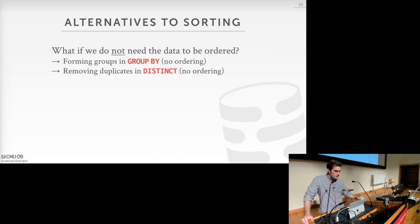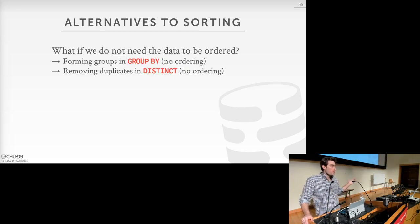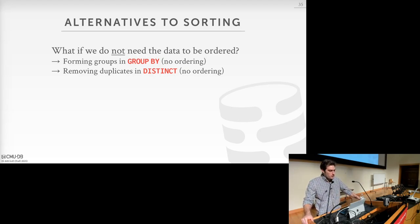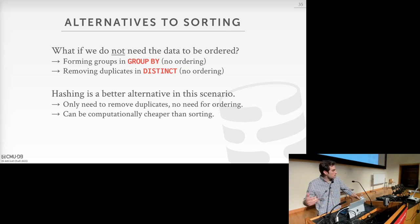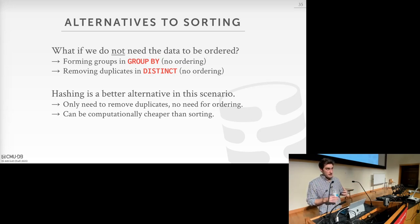What if we don't need the data to be ordered — for example, a GROUP BY without an ORDER BY, or duplicate elimination without caring about output order? In these cases, hashing is a better alternative and can be computationally cheaper than sorting, since we don't need to fully order the input to later operators in the query plan.